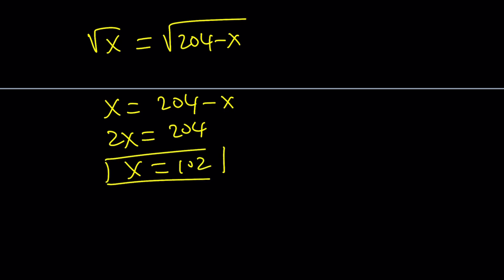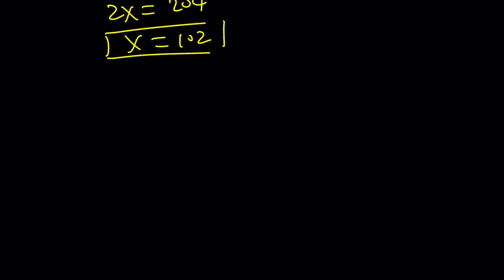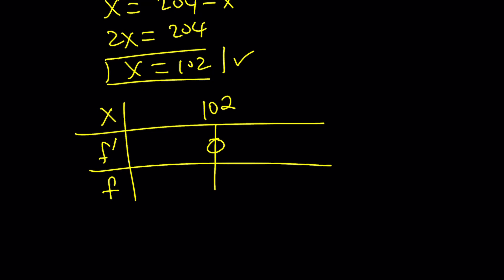This basically means that at x equals 102, this function will either have a maximum or a minimum. How can we tell? Let's go ahead and make a table. Our table is going to have two rows. We'll put the x in the top, and then we're going to have the f prime here and the f here. And then we're going to put our critical value, which is x equals 102. That's where the first derivative is zero, or some people say the first derivative vanishes.